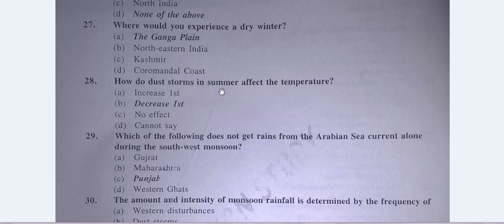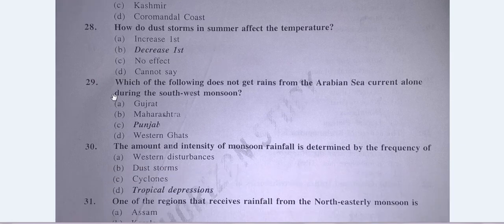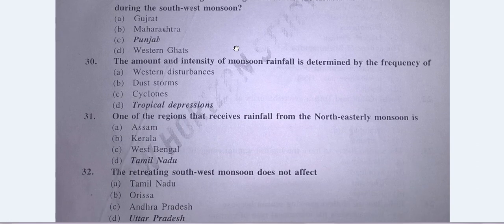Question No. 28: How do dust storms in summer affect the temperature? The answer is B — they decrease the temperature fast. Question No. 29: Which of the following does not get rains from the Arabian Sea current alone during the south-west monsoon? The answer is C — Punjab.